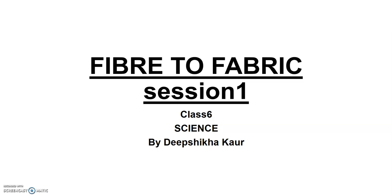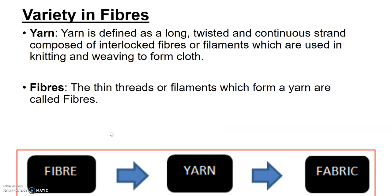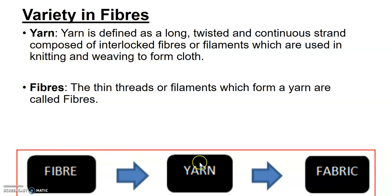Today's session is on a new chapter: Fiber to Fabric. We have to understand first a few terms. The first term is fiber, the second is yarn, and the third is fabric. Fiber is something obtained as a raw material from plants or from animals. For example, cotton is obtained from a cotton plant, and that raw thing we get from a cotton plant is called fiber. That fiber is then twisted and turned to form a thread-like structure which is called yarn.